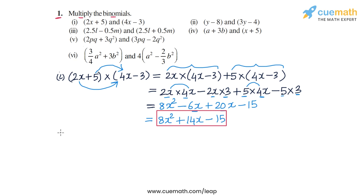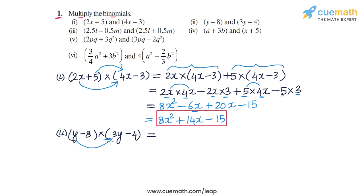Now let's go to the second part, where we have to multiply y minus 8 with 3y minus 4. We apply the distributive law and expand along the first bracket: y into 3y minus 4, minus 8 into 3y minus 4.